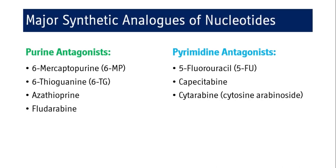What are the major synthetic analogues of nucleotides? There are purine antagonists as well as pyrimidine antagonists. The major purine antagonists are 6-mercaptopurine, 6-thioguanine, azathioprine, and fludarabine — though the list is not limited to these four. The pyrimidine antagonists include 5-fluorouracil, capecitabine, and cytarabine, also called cytosine arabinoside.